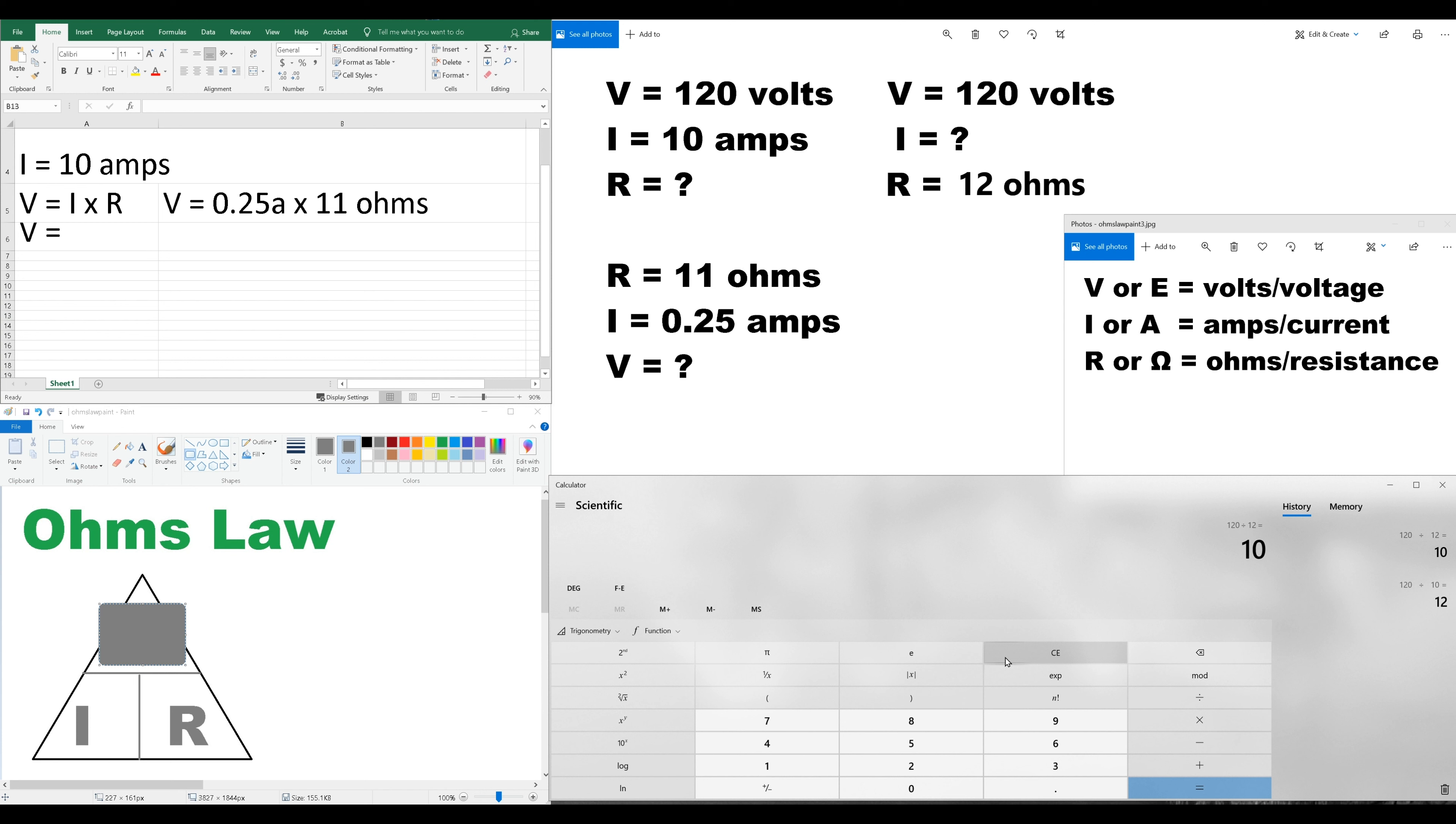V equals, let's see what we get here. 0.25 times 11. It's going to give us 2.75. And that's volts, or V for short.